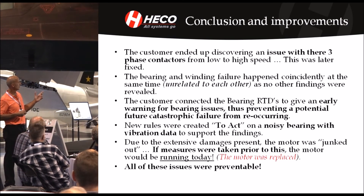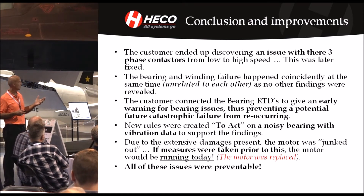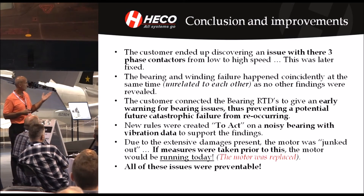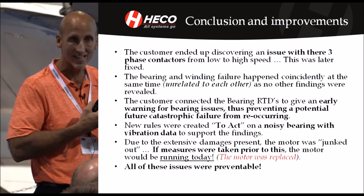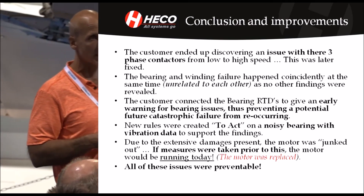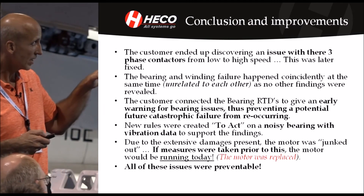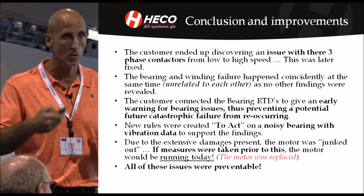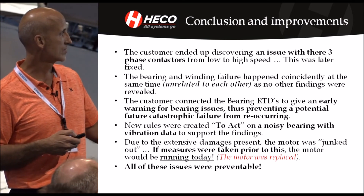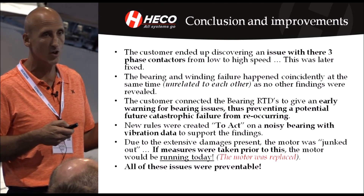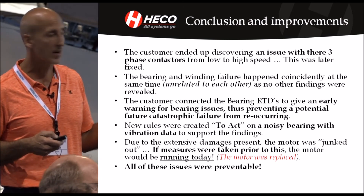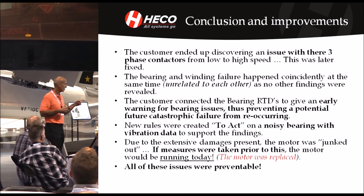Conclusions and improvements: the customer ended up discovering they had an issue with their three-phase contactors from low to high, and the evidence pointed in that direction. The bearing and winding failure happened coincidentally at the same time, unrelated to each other — no other findings were there to connect those two. The customer connected the bearing RTDs and started measuring and monitoring them to give some kind of warning, preventing a potential future catastrophic issue. They put together new rules when they had a noisy bearing, supporting that with vibration data and acting on it. Due to the extensive damage, the motor was junked out — it could have been repaired but it wasn't economical. If measures had been taken prior, the motor would be running today. All of these issues were preventable.